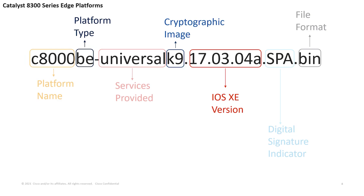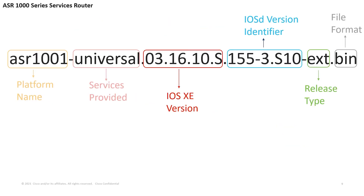I'm going to start speeding it up and going through some more routing platforms and the breakdowns. What's new here is the BE after the platform name — this stands for branch edge. On this ASR 1000 series router image, there are two new elements: the IOS D version identifier and the release type. The version for IOS D is 15.5. The D in IOS D stands for daemon — D-A-E-M-O-N — a Linux program that executes in the background ready to perform an operation when required. This is software that incorporates the routing protocol functionality of Cisco IOS and runs as a separate process on a device. The release type here is EXT, which means this image contains an extended maintenance release of 3.10S.